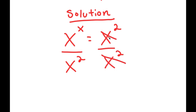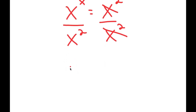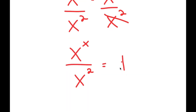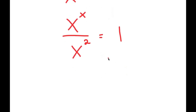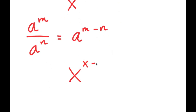The x to the power of 2 on the right-hand side cancels out, leaving x to the power of x over x to the power of 2 equals 1. Using the exponent rule — a to the power of m over a to the power of n equals a to the power of m minus n — I get x to the power of x minus 2 equals 1.